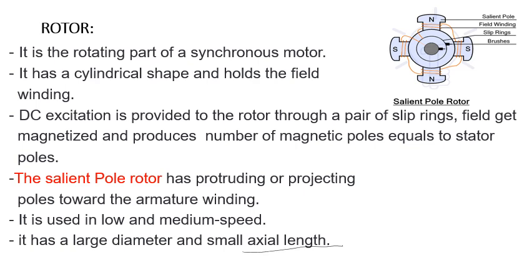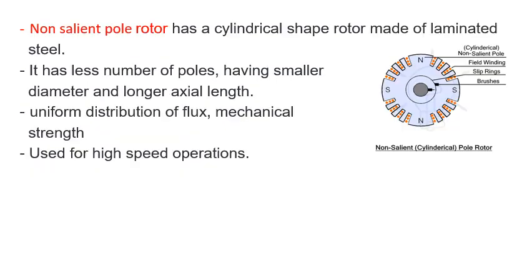We have already discussed the difference between salient pole and non-salient pole type machines in a previous video — you can refer to that for more details. In this slide you can see a non-salient pole type rotor. Here the poles are not projecting, hence they carry the name non-salient pole type machine, or otherwise smooth cylindrical pole type machines. These rotors are normally used for high speed operations and they have a smaller diameter and longer axial length.